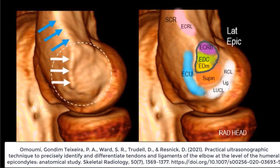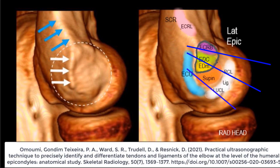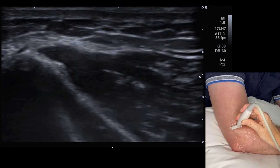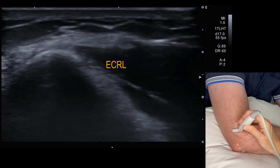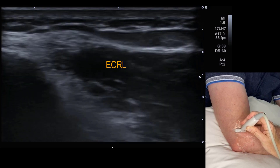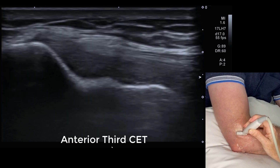There are four initial probe positions. The first will be at the supracondylar ridge, and then the next three will be in the common extensor tendon: anterior third, central third, and posterior third. These are required to accurately assess the underlying ligaments. The first position starts with extensor carpi radialis longus, which is muscular as we sweep down in the axial probe position.